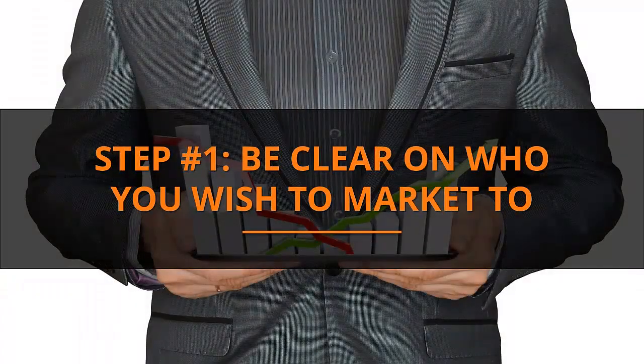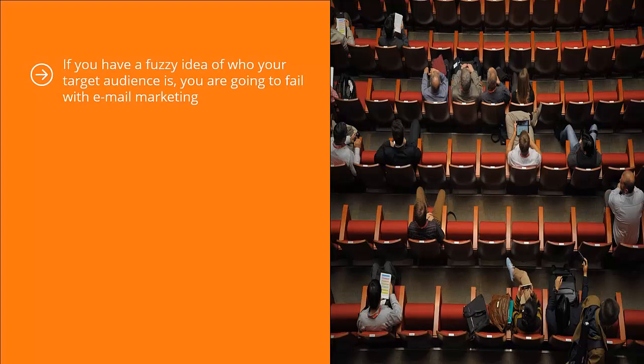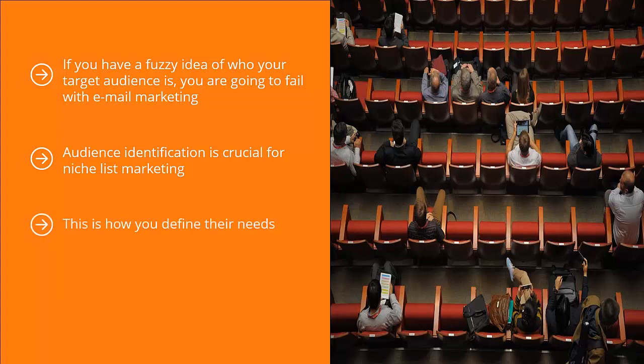Step 1: Be clear on who you wish to market to. If you have a fuzzy idea of who your target audience is, you are going to fail with email marketing. You might as well give up now if you are chasing after some sort of vaguely defined market. Audience identification is crucial for niche list marketing. You cannot just target everybody — you have to drill down to a specific population of people who are trying to solve a fairly narrow set of problems. This is how you define their needs.